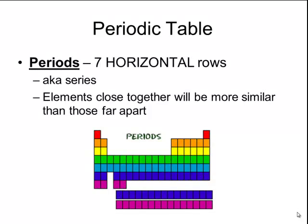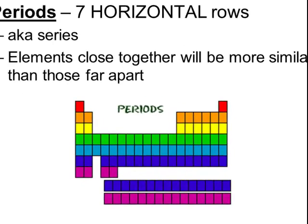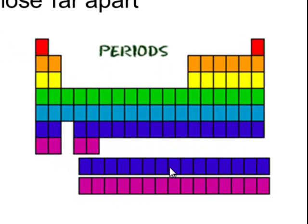The periodic table is also arranged into horizontal rows called periods, and there are seven of them going from the top of the periodic table to the bottom. Those seven periods are also called series. So way down here you have a blue period that is called the lanthanide series, and then this purple row down here at the bottom that is called the actinide series.